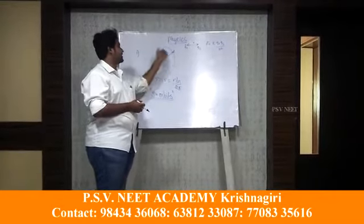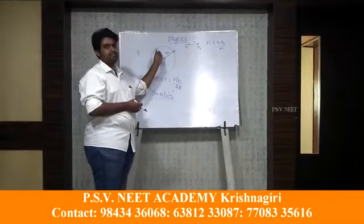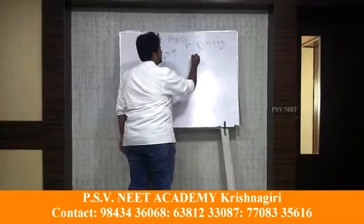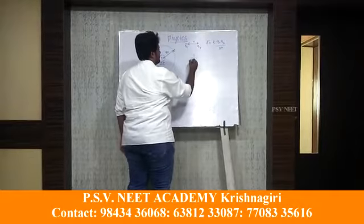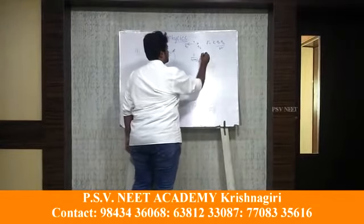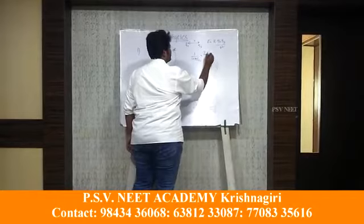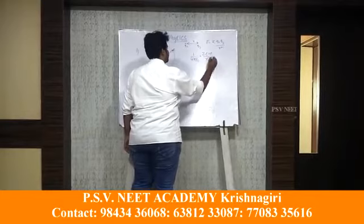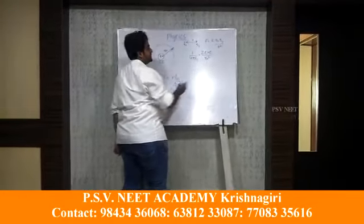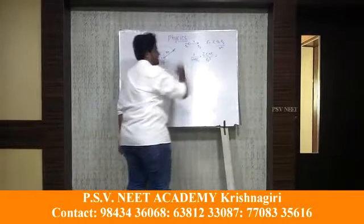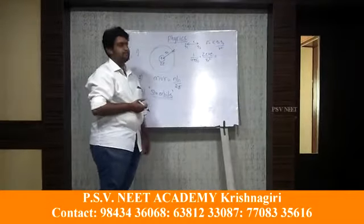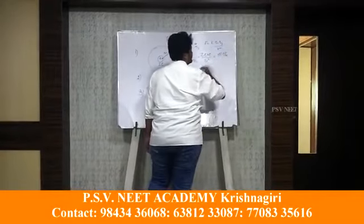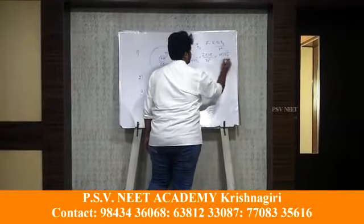We consider vacuum between the nucleus and the stationary orbits. So we write k as 1 / (4πε₀), giving the electrostatic force as (1 / 4πε₀) × Ze² / Rn². This equals the centrifugal force, which is m × Vn² / Rn, for the nth orbit.